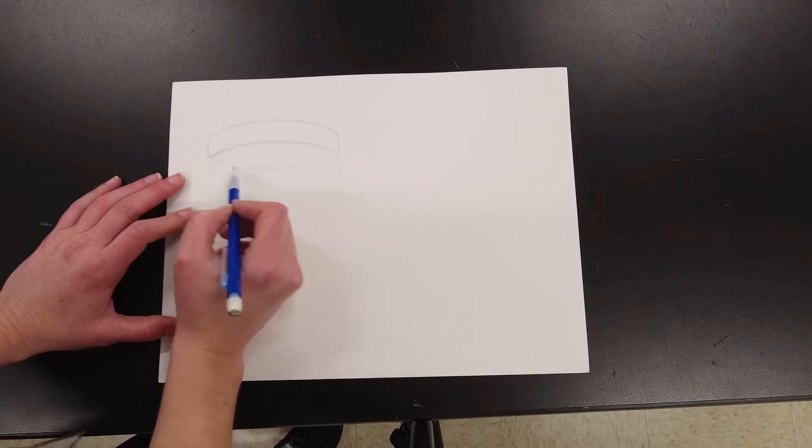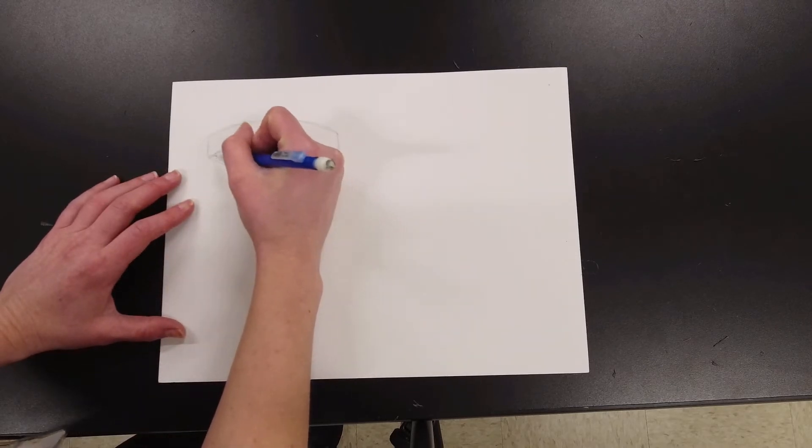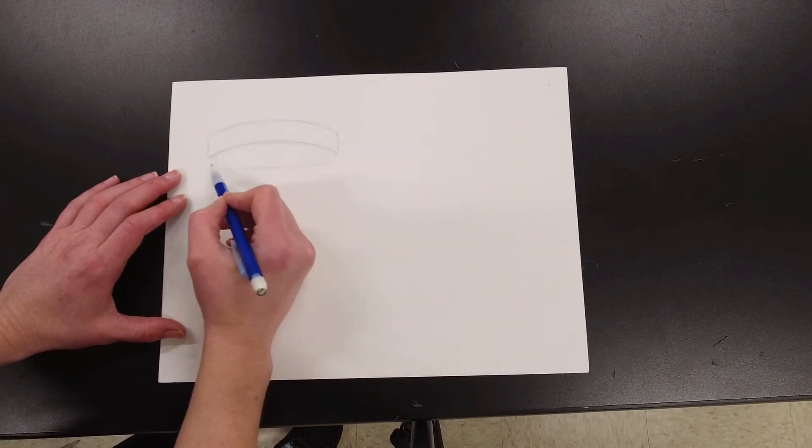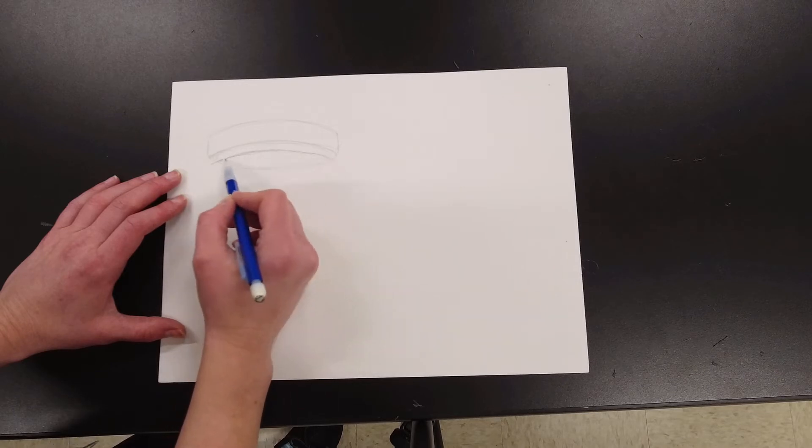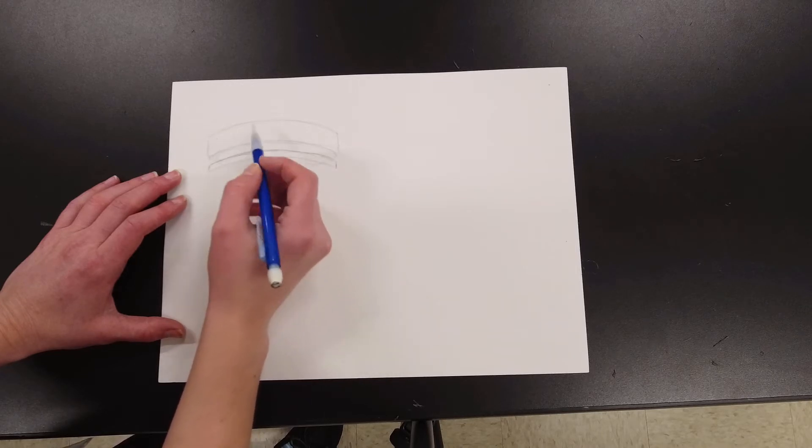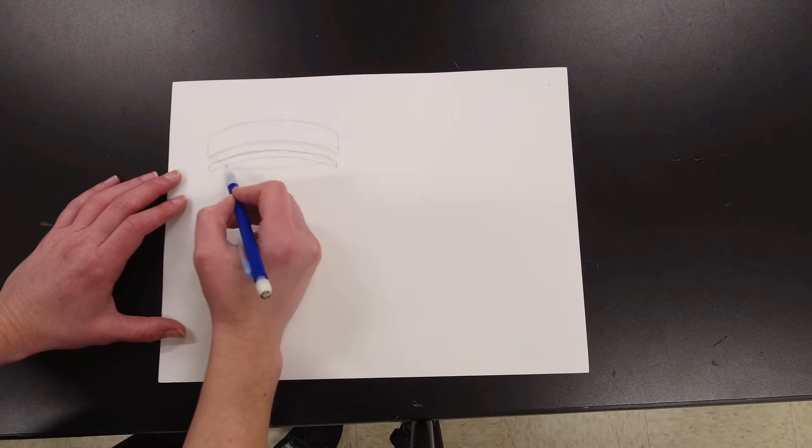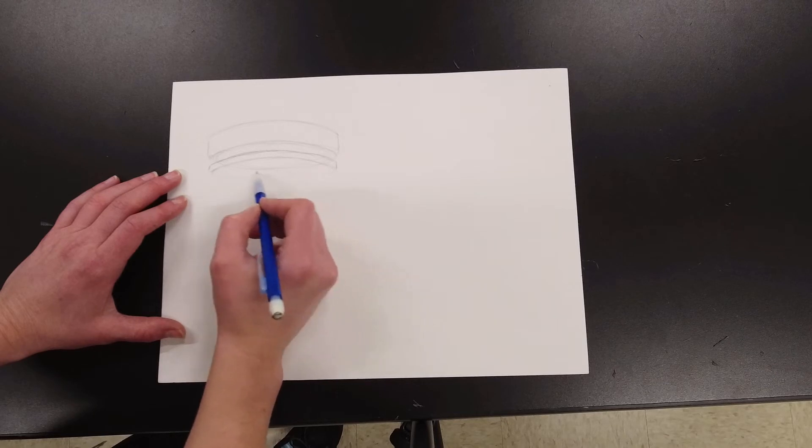Now what I'm doing is very lightly just drawing sort of the bottom of that plate. Then I could go ahead and draw my column or I could go ahead and add sort of another little plate. Make it a little smaller this time, just to give a little bit of fanciness to that column.